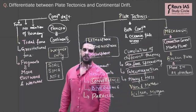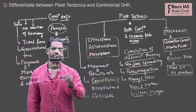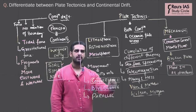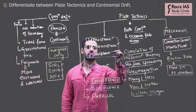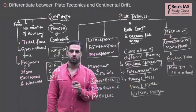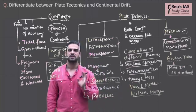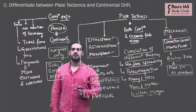Continental drift theory takes in consideration sial, sima, and nife, whereas plate tectonics theory takes in consideration lithosphere, asthenosphere, mesosphere—mesosphere means middle layer which is mantle, core means barysphere—so lithosphere, mesosphere, and barysphere.